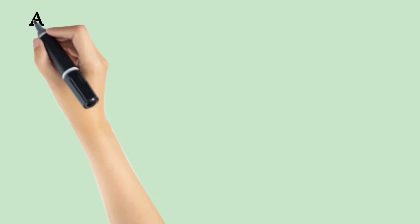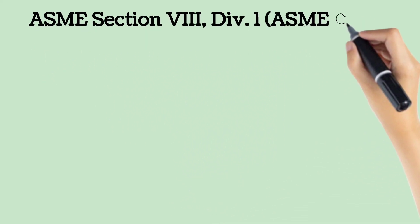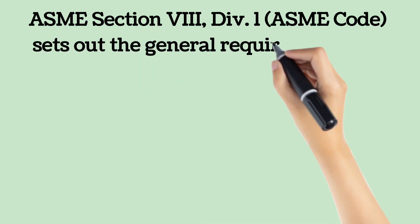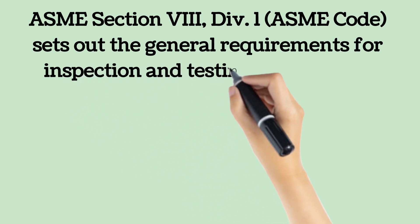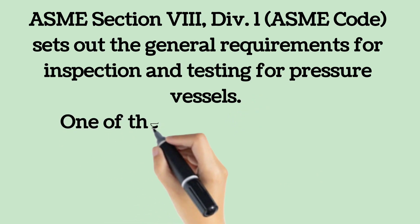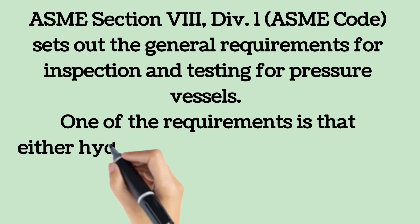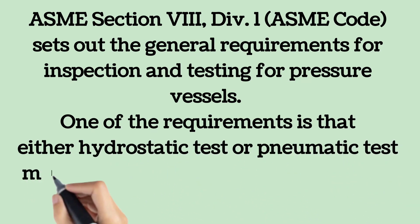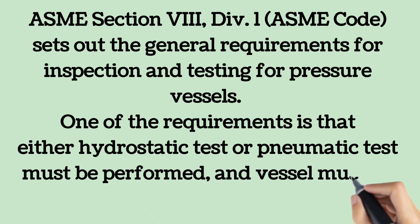ASME Section 8, Division 1 sets out the general requirements for inspection and testing for pressure vessels. One of the requirements is that either a hydrostatic test or pneumatic test must be performed, and the vessel must be inspected during the test. The hydro test is the most common test for pressure testing of pipes and vessels.